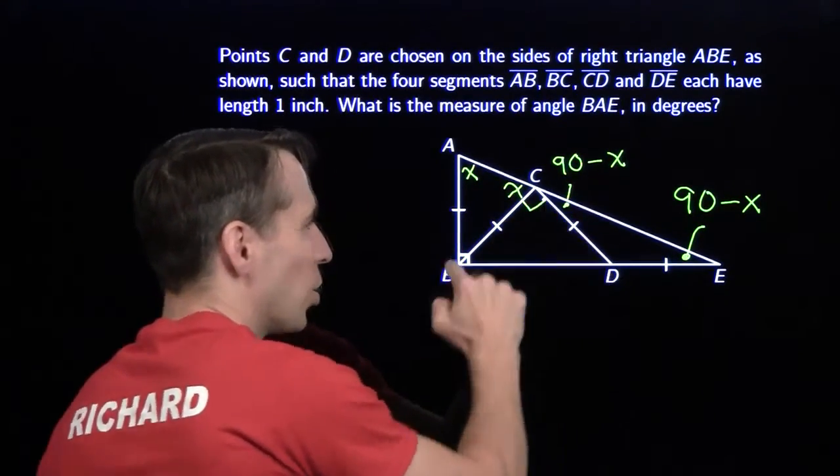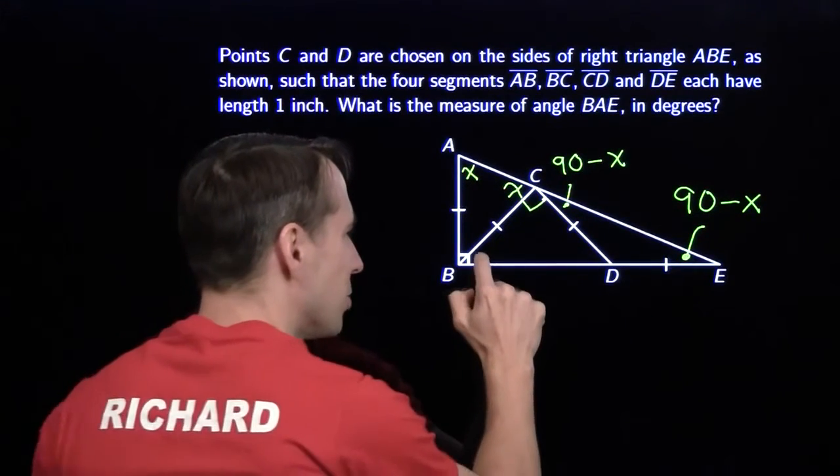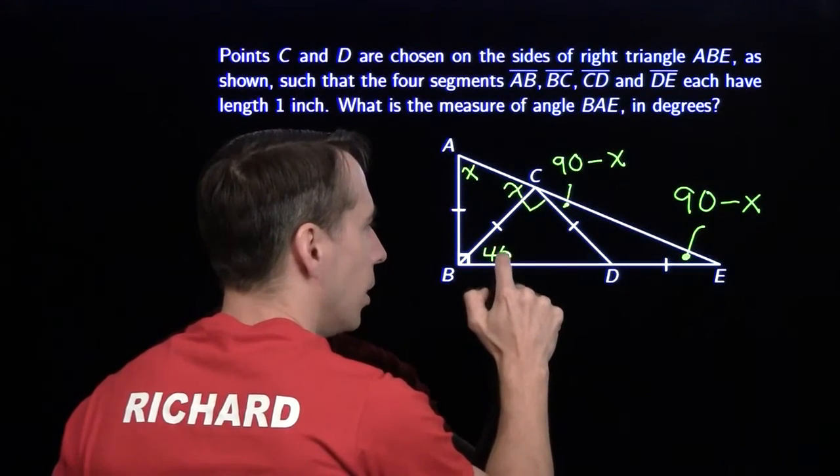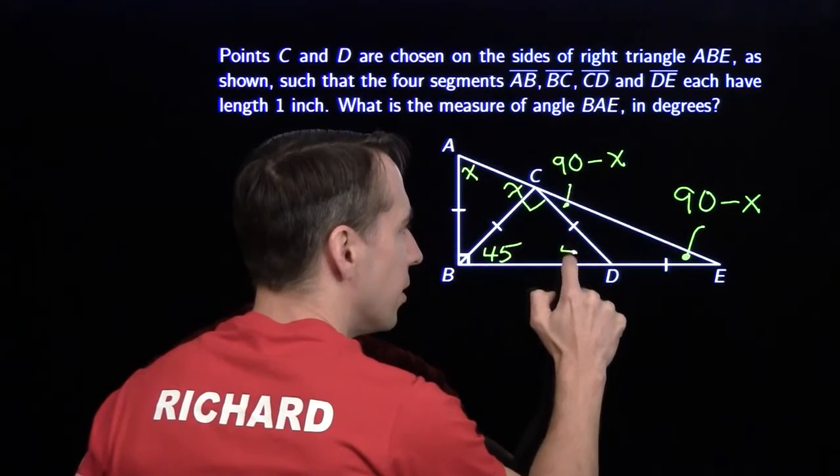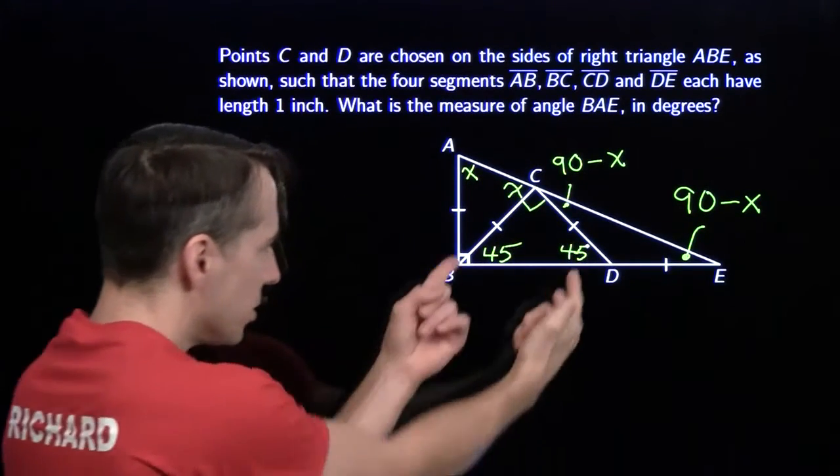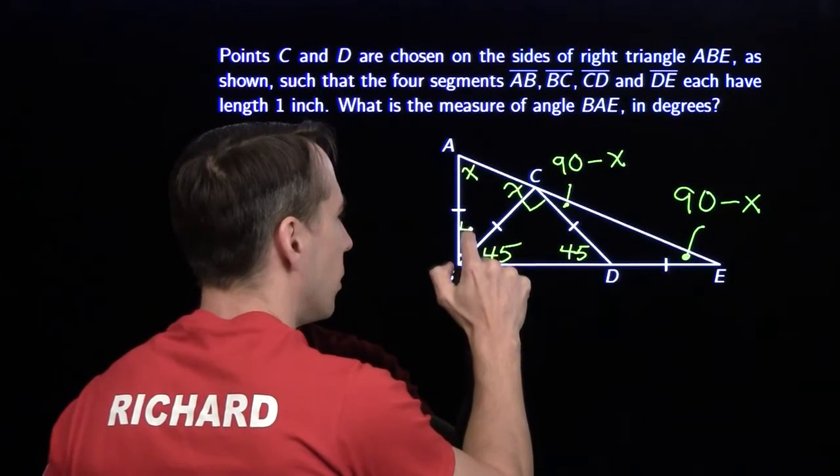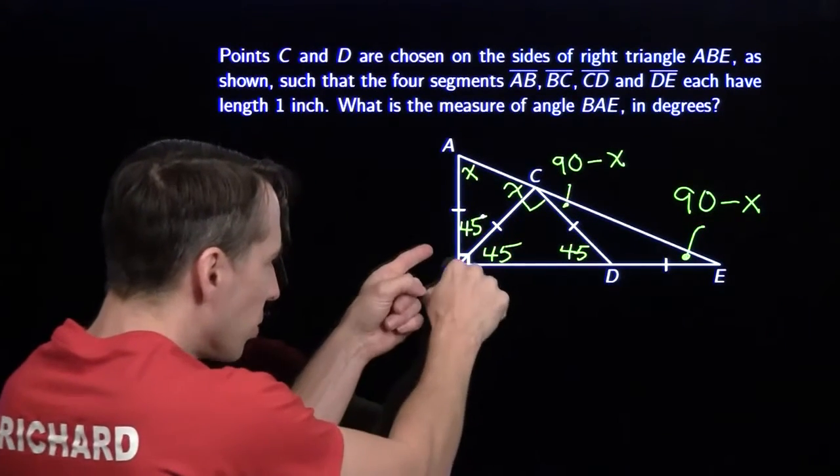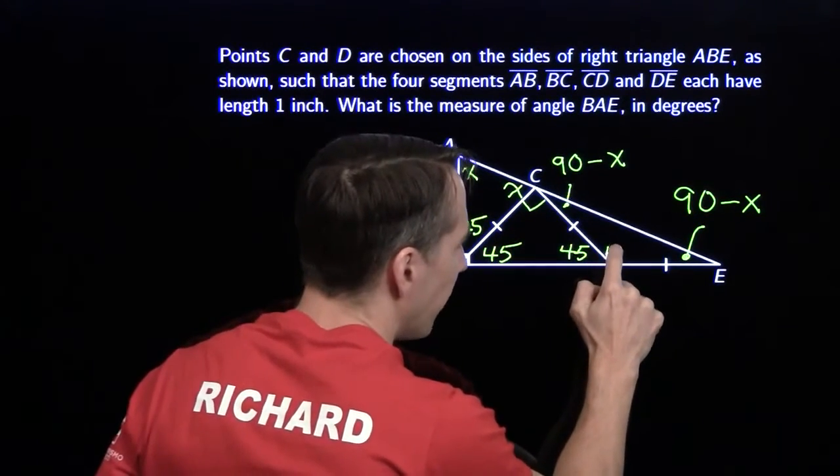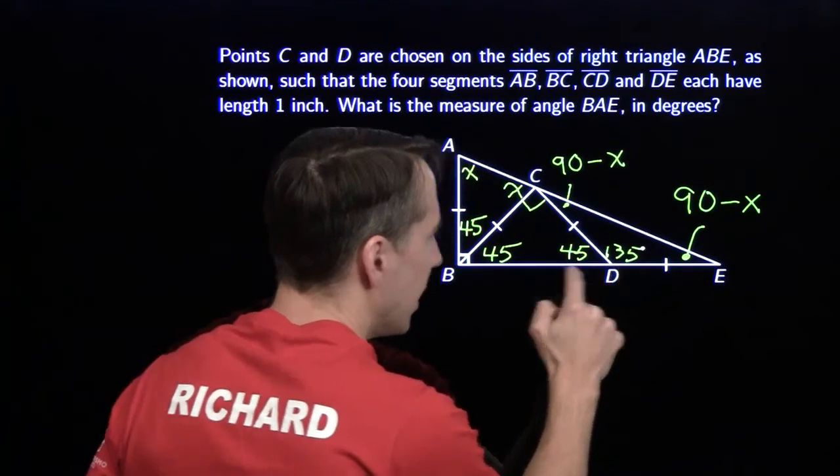This is an isosceles triangle. Isosceles right triangle. That tells me that these two are 45. Again, all I'm doing is just writing down the things as I discover them. Since these two are 45, well, I know what this angle is. This angle is 45. Because these two have to add together to 90. And this one is 135. Because these two have to add together to be 180.